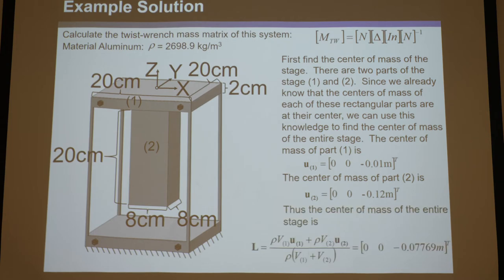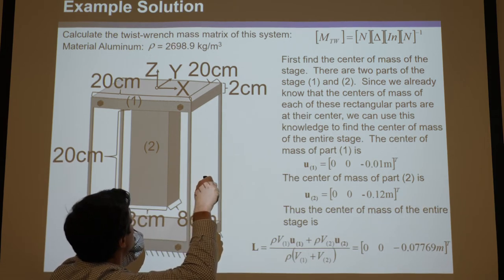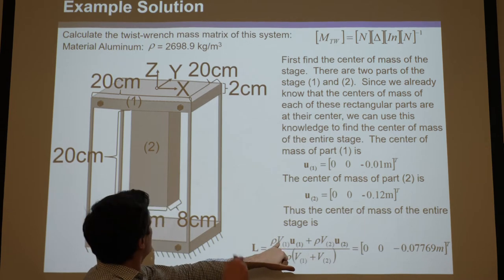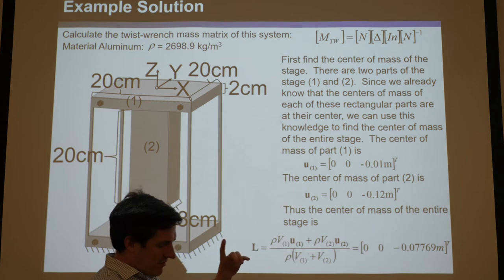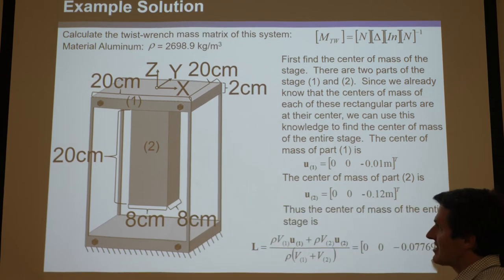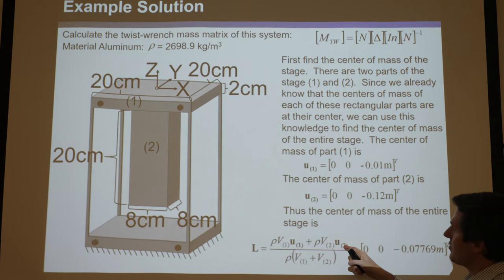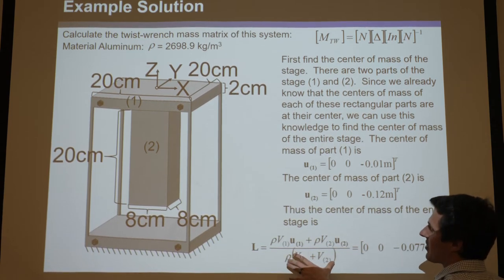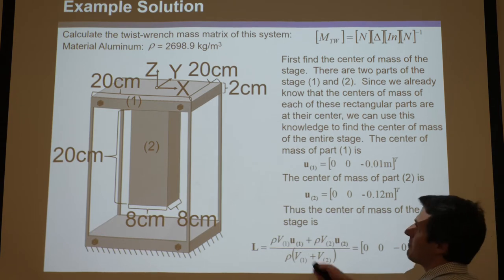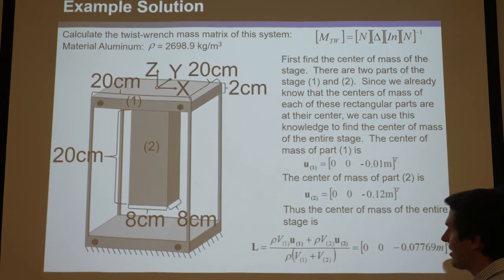The way you find the center of mass of the whole stage is you take rho — assuming the same density throughout, which for aluminum is 2,698.9 kg/m³ — times the volume of the first part times that vector, add it to rho times the volume of the second part times u2 (the center of mass of that portion), then divide by the total mass, which is rho times (V1 plus V2). So you take the mass of each part times its center of mass, add them, and divide by total mass.